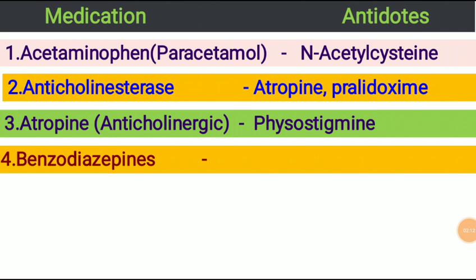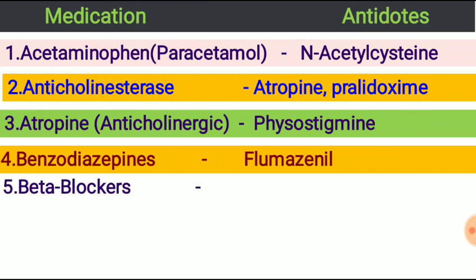Next, benzodiazepines. Benzodiazepines are used for psycho and neurological disorders including anxiety disorders, seizures, and panic attacks. The antidote of benzodiazepines is flumazenil, which inhibits the action of benzodiazepines.